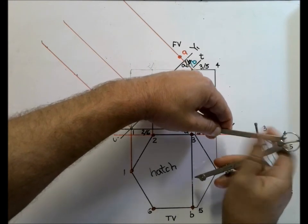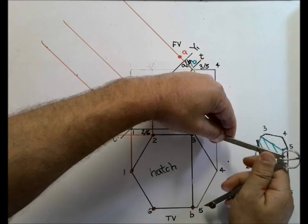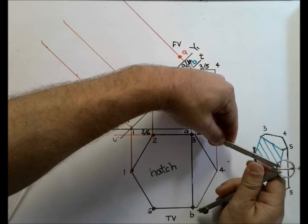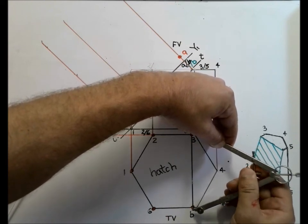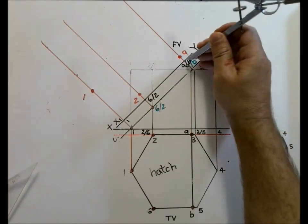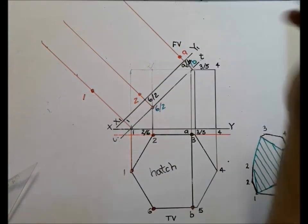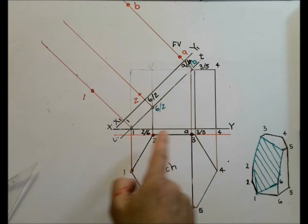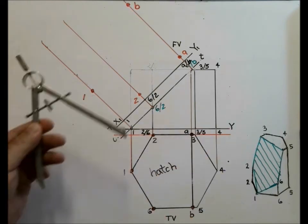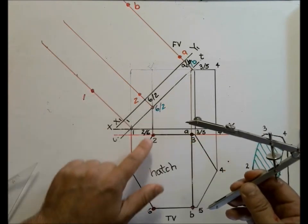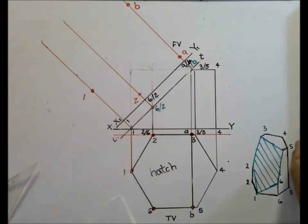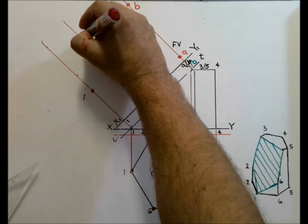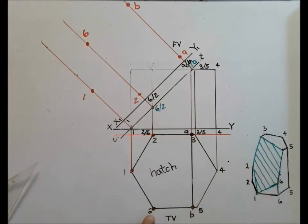I now need to find the full distance from the XY axis down to B. I open the compass nice and big and plot B on the same projection line. We know that B and six are equally distant from the XY axis, so I use the same distance for number six, which is in line with number two. We know six connects back to one, which we've already found.